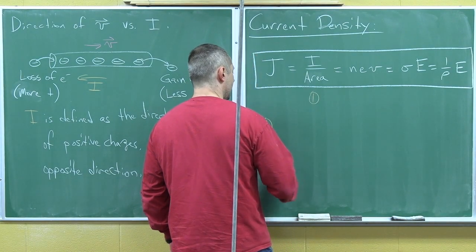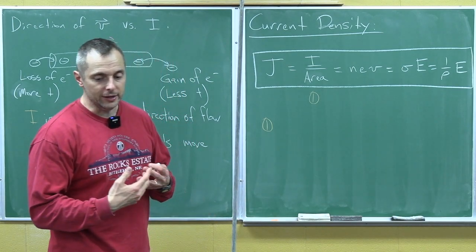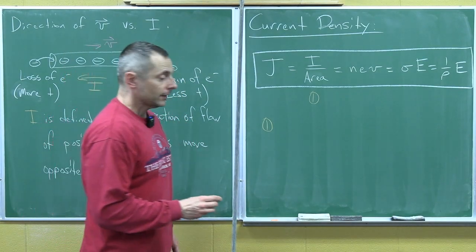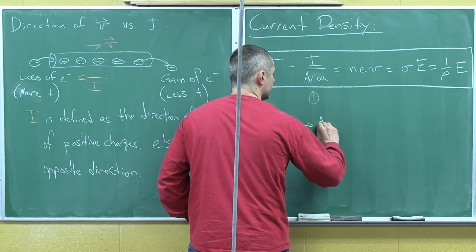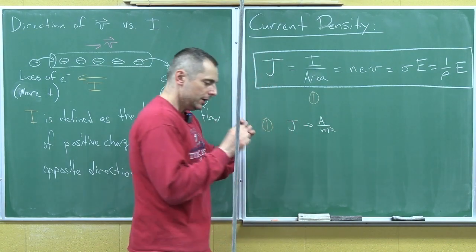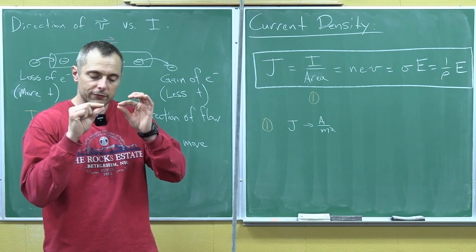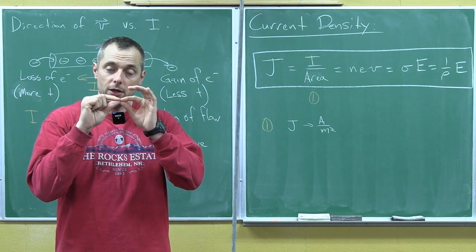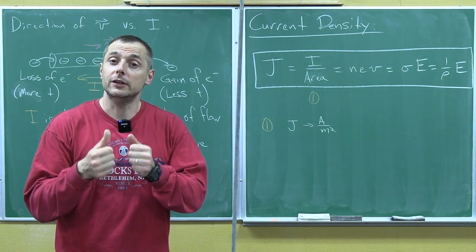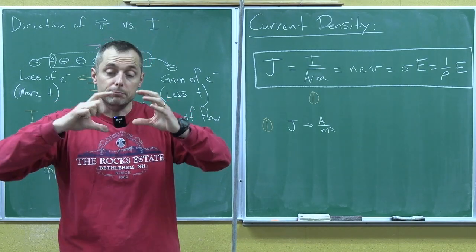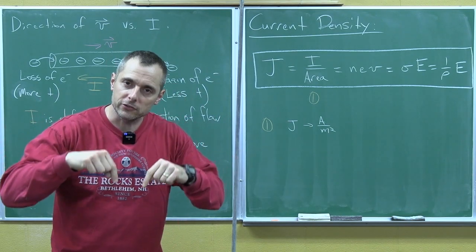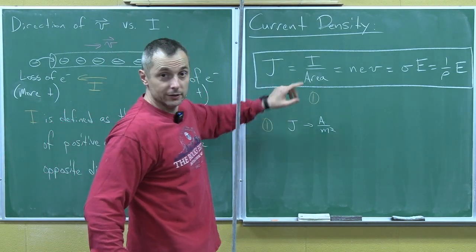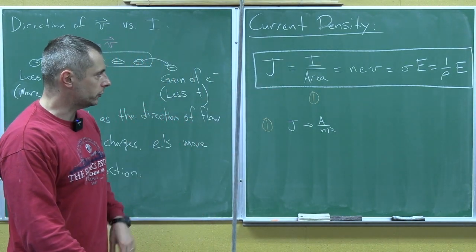So one, this is, it defines J as amps per meter squared. It's how concentrated that current is. So if you have a skinny wire and a certain amount of current, the current density is high. If you've got a big thick wire, same current, it's more spread out, J is lower, more area. So it's like, again, the concentration.